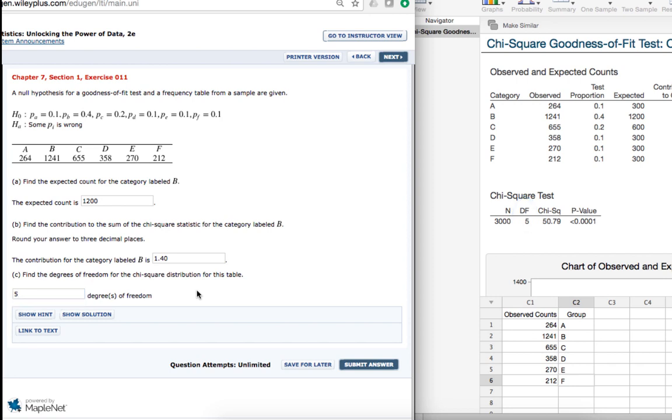We're not asked for this here, but for some questions, you'll also be asked for the chi-square test statistic and the p-value, which we can get from this output as well.